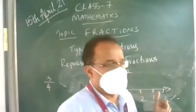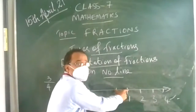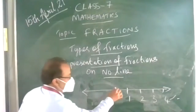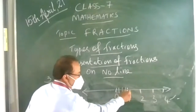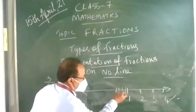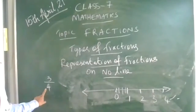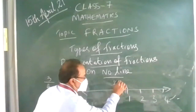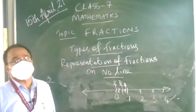Between 0 and 1, divide the segment into 4 equal parts, as the denominator indicates. The first part is called 1 upon 4, the second part is 2 upon 4, and the third part is 3 upon 4. So this point is 3 upon 4 on the number line, and the endpoint is 4 upon 4.